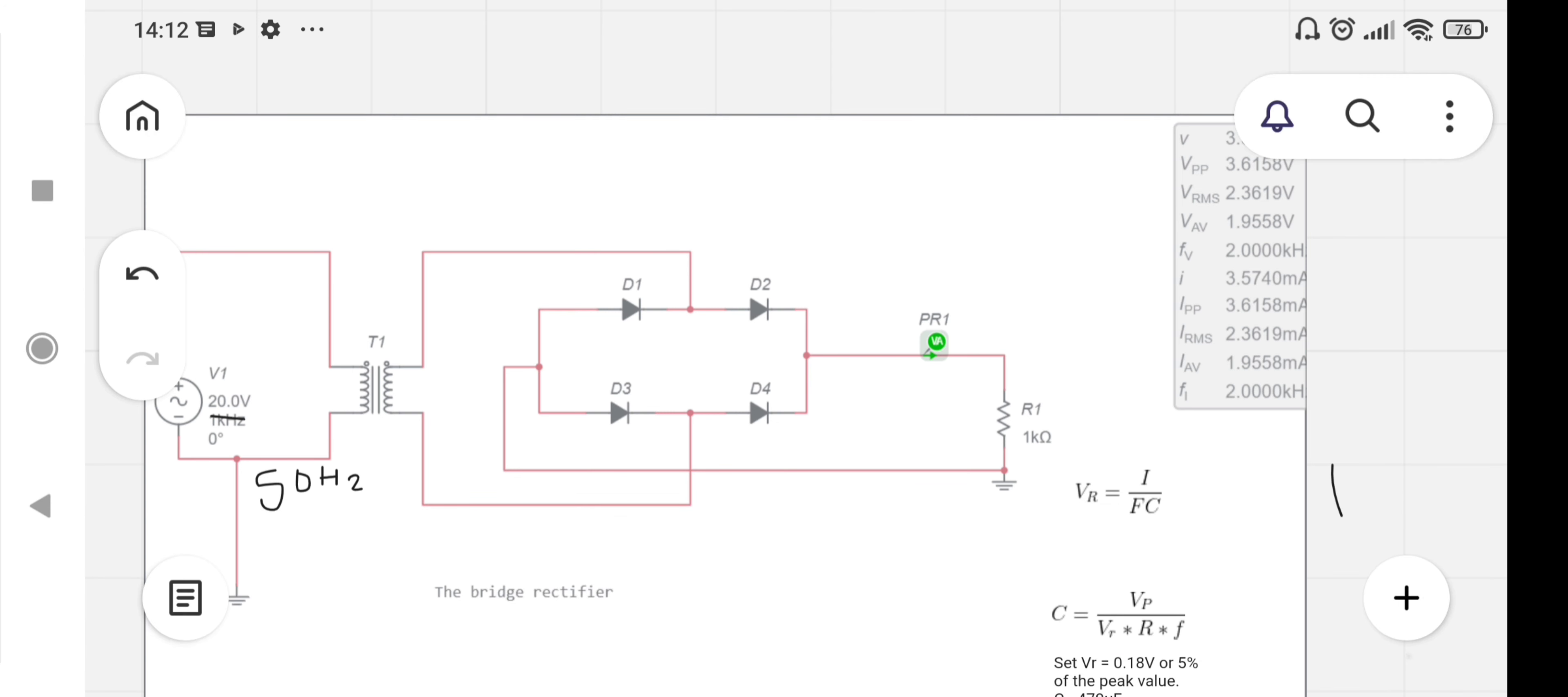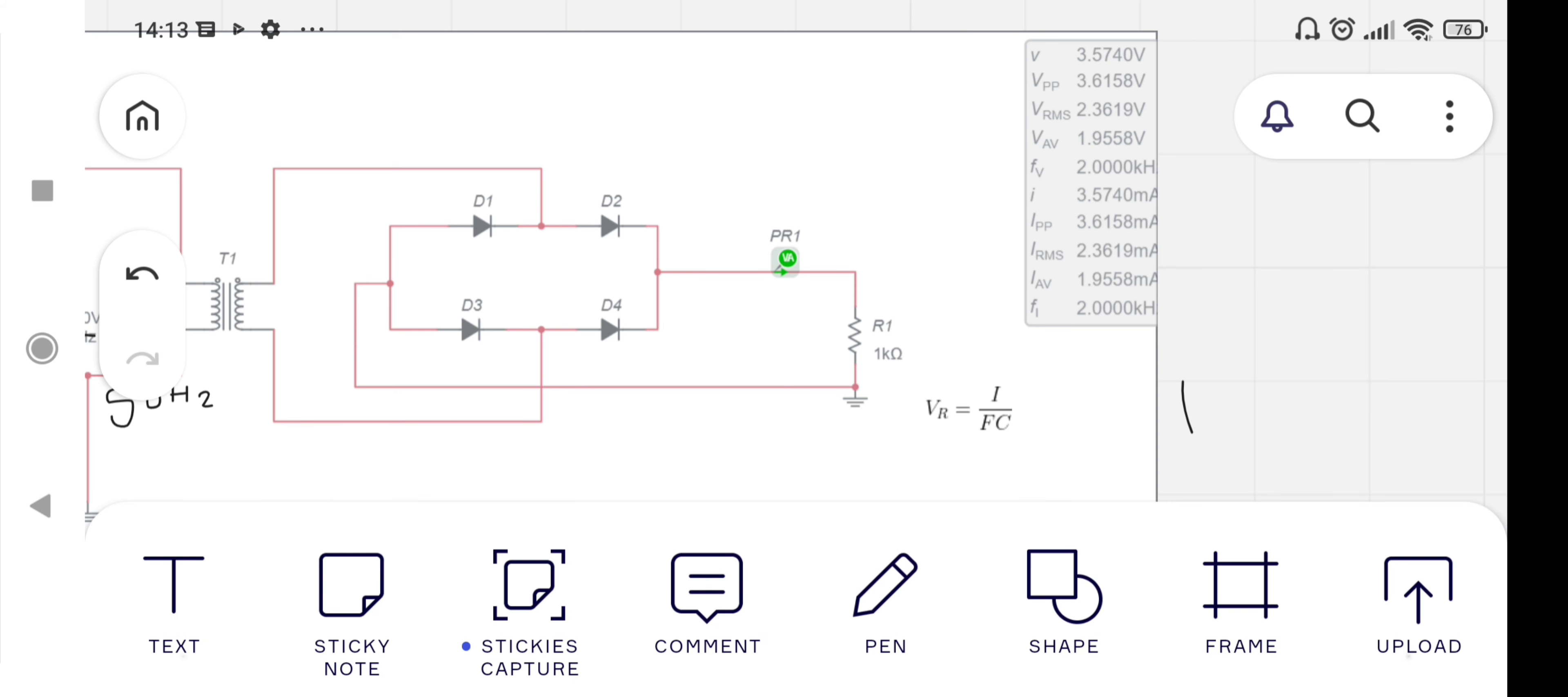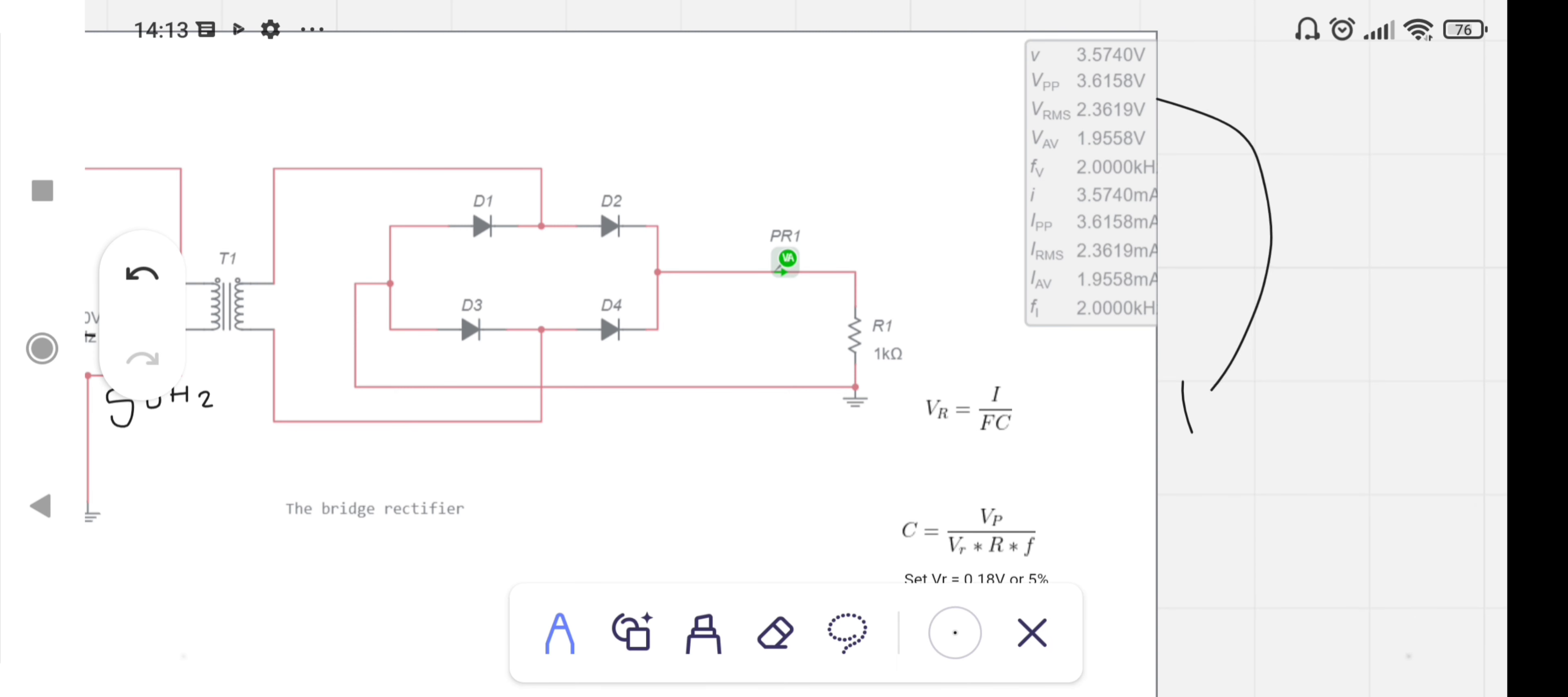Consider VP is 3.6 volts in this case. VR is 5% of 3.6 volts. This is the peak voltage - 3.6 volts.